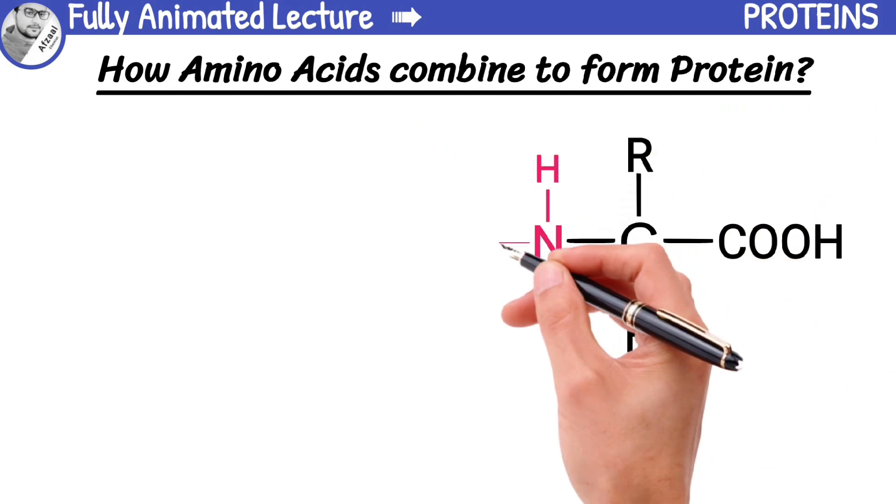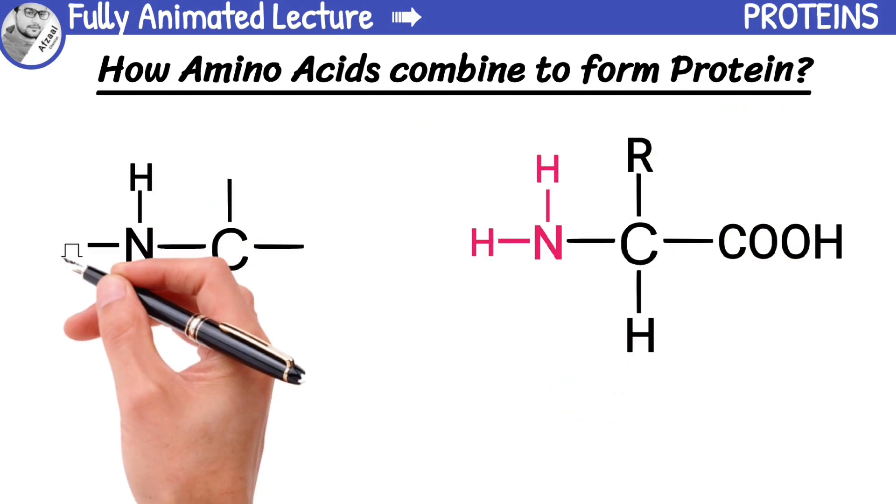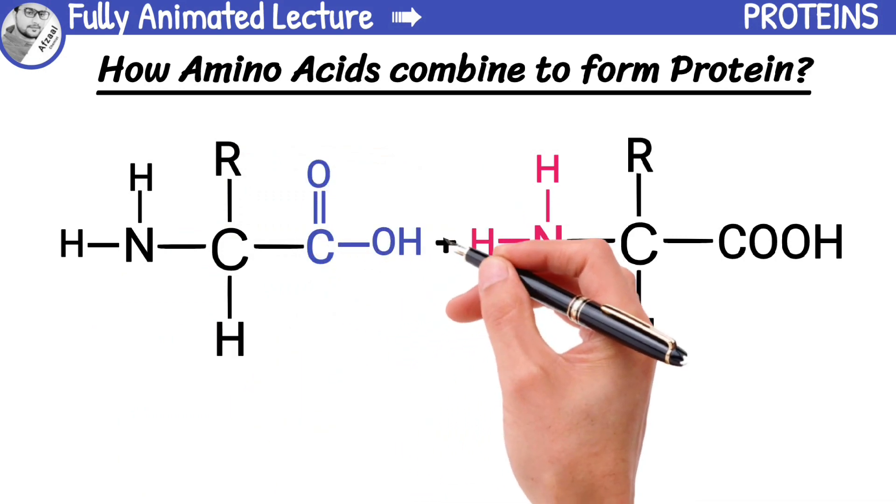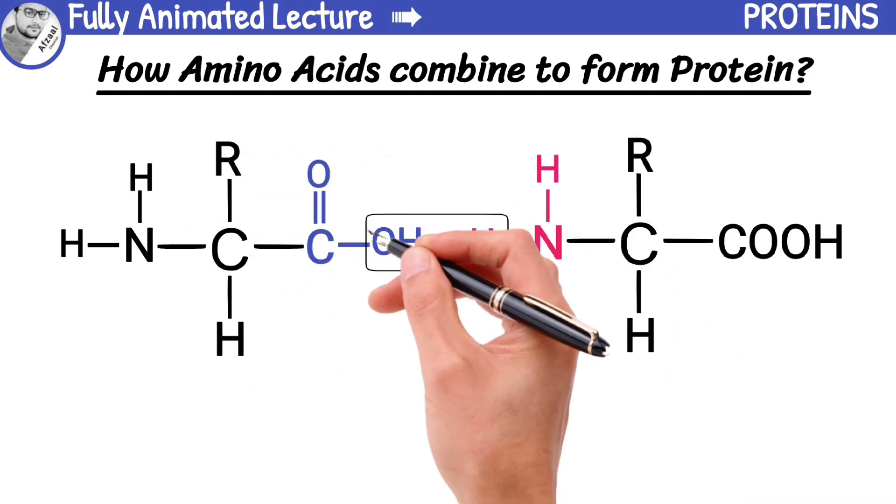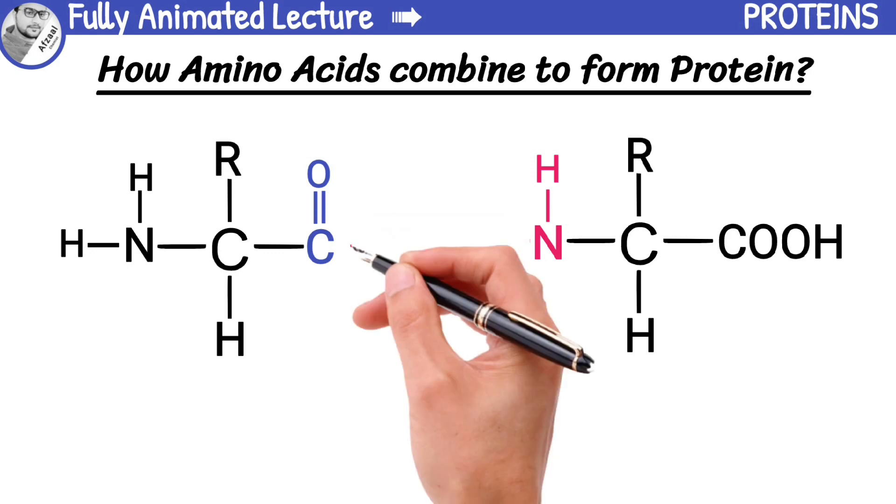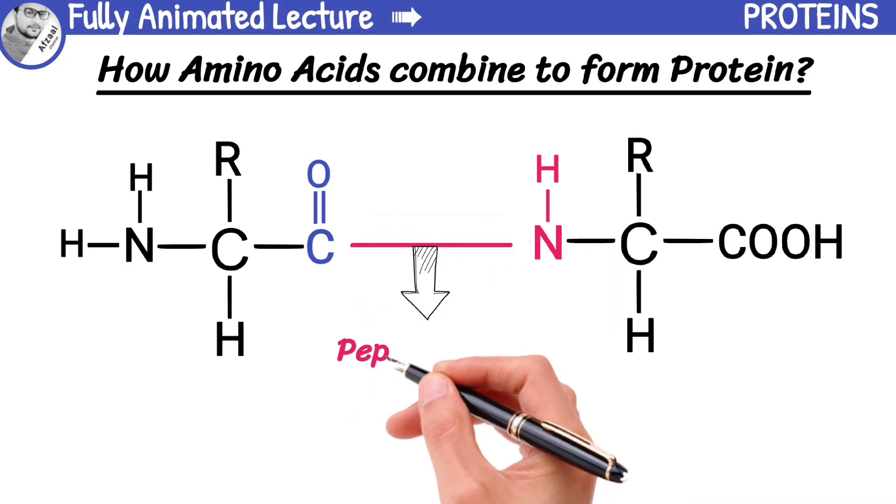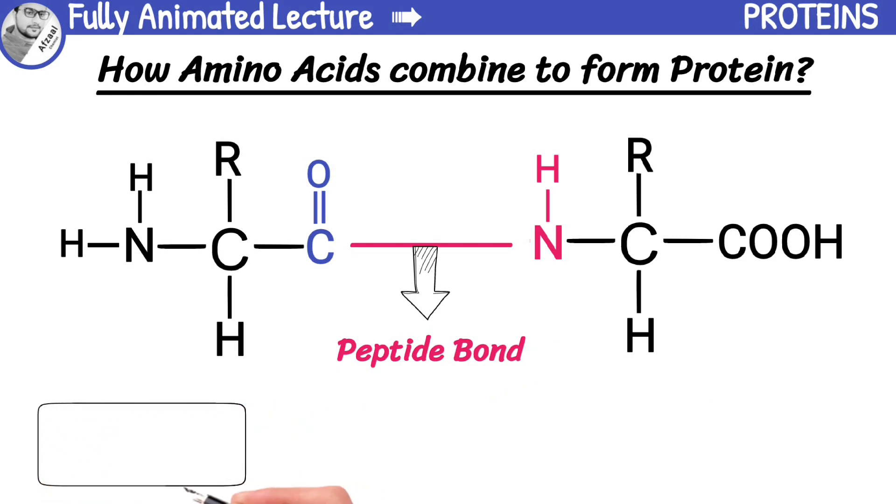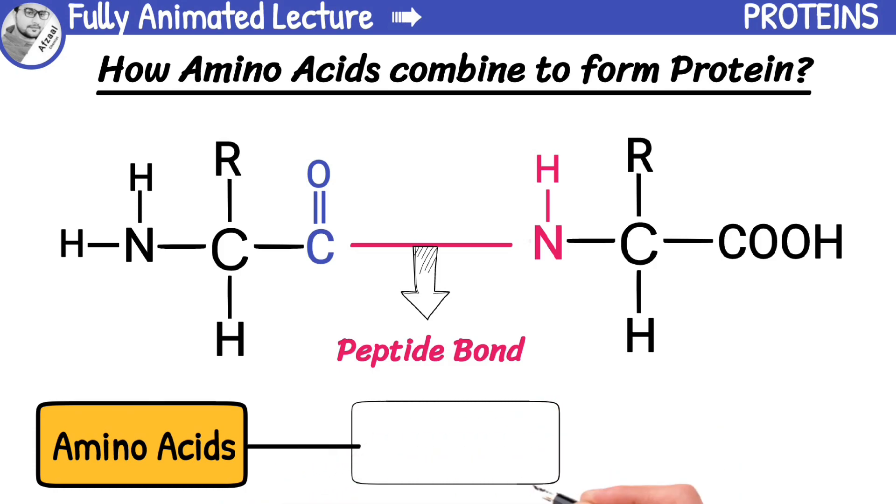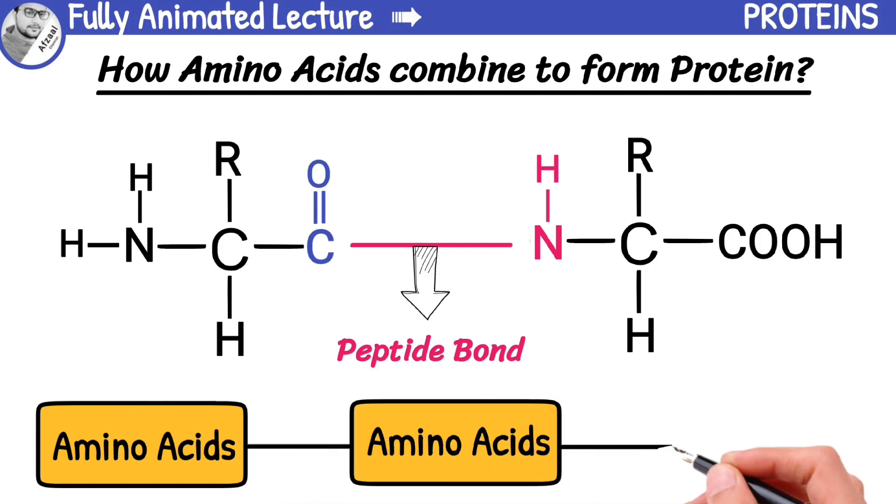the amino group of one amino acid reacts with carboxyl group of the other amino acid, resulting in the elimination of a water molecule. And the bond formed between these two amino acids is known as peptide bond. This process continues as more and more amino acids are added to the chain, ultimately creating a protein with a unique sequence of amino acids.